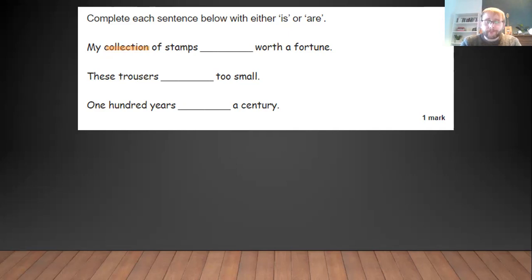Okay, so the first one is singular. I know it's stamps plural, but we're talking about the collection of stamps and collection is singular. There's only one collection. It might contain lots of things but there's only one collection. Because it's singular, that is why we use is. So when something is singular we say is. When it is plural we use are.